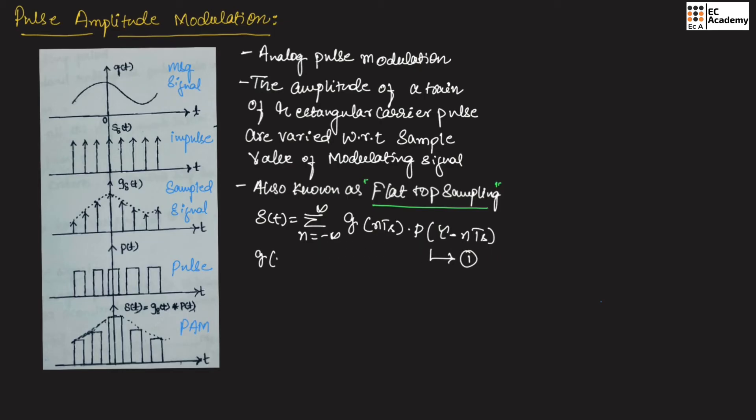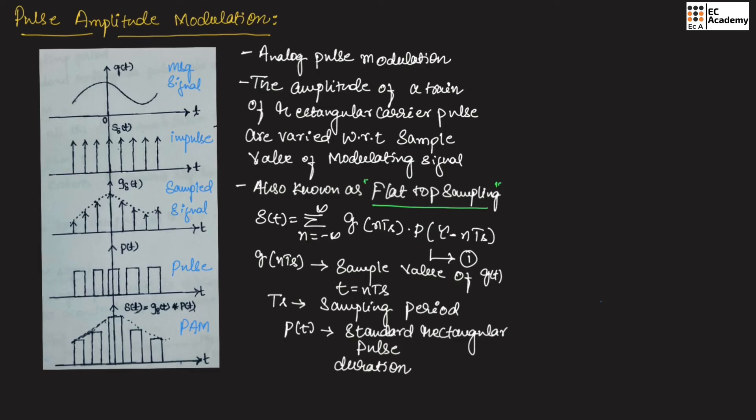Here G of NTS is sample value of G of T obtained at T equals NTS. Here TS is the sampling period and P of T is standard rectangular pulse which is of the duration tau.